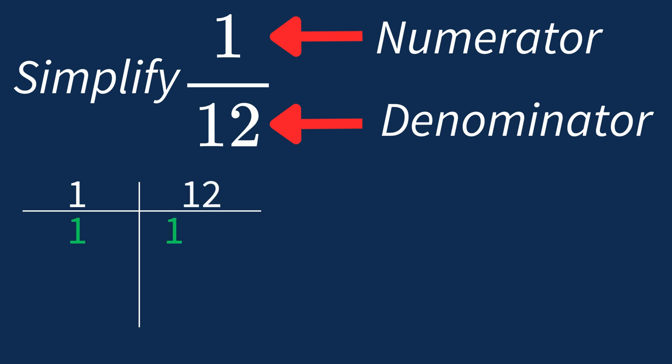For 12, the factors are 1, 2, 3, 4, 6, and 12.